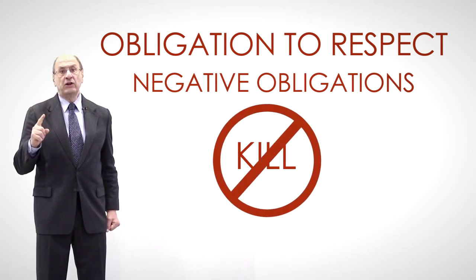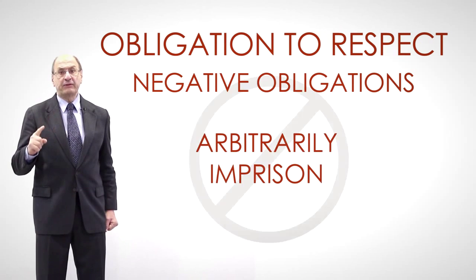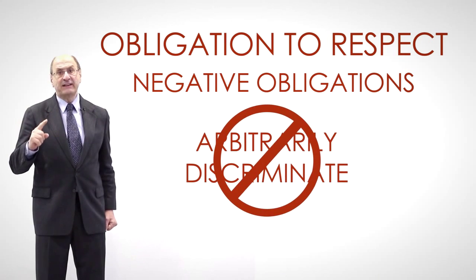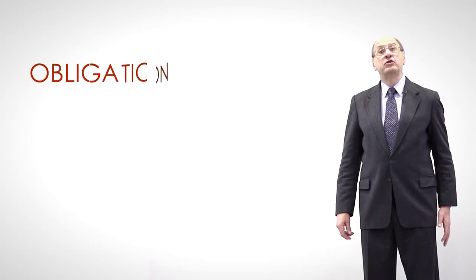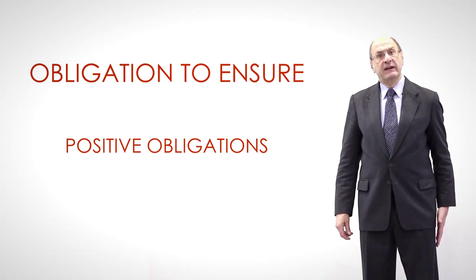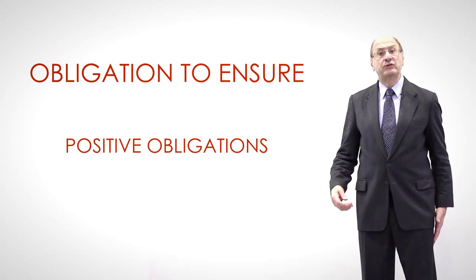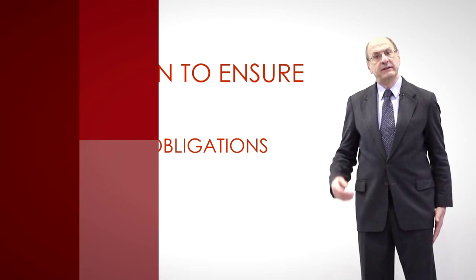Negative obligations include: not to kill, not to torture, not to arbitrarily imprison, not to censor, not to arbitrarily discriminate, etc. The obligation to ensure is positive. It means taking all necessary actions to guarantee that the values that human rights law intends to protect are indeed safeguarded.